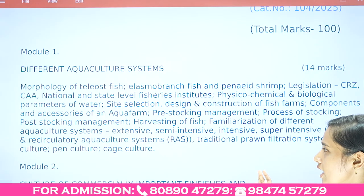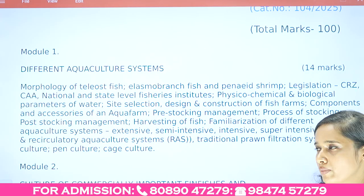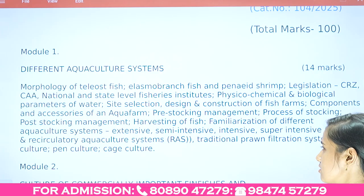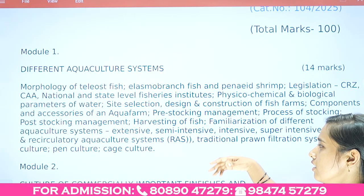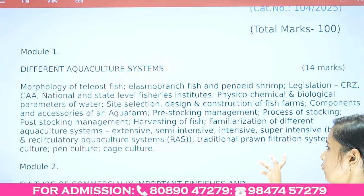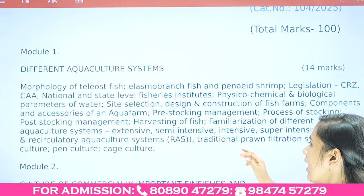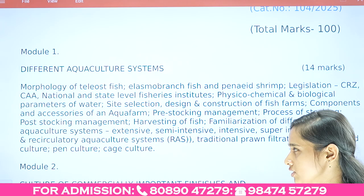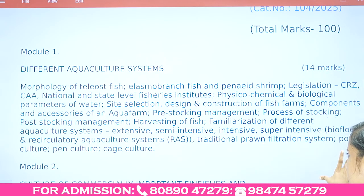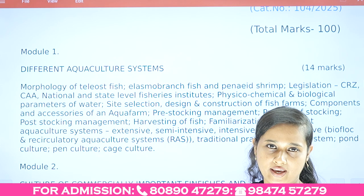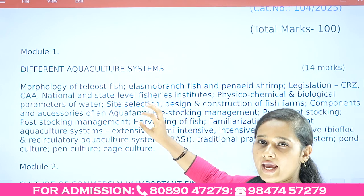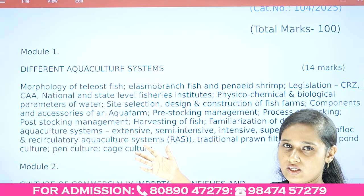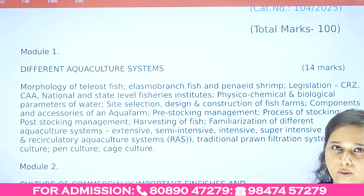Module 1 also covers familiarization with various aquaculture systems: extensive, intensive, semi-intensive, super intensive, recirculated aquaculture systems, bio-flow, traditional front filtration systems, and different culture systems — pond culture, pen culture, and cage culture. All basic aspects of aquaculture systems and morphology are covered.